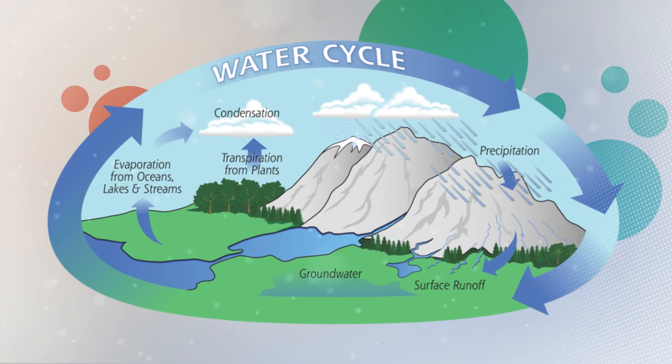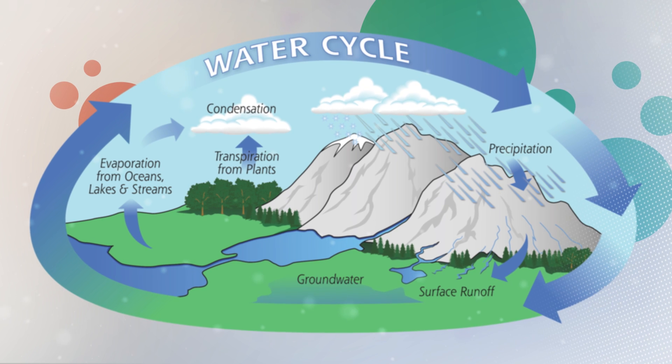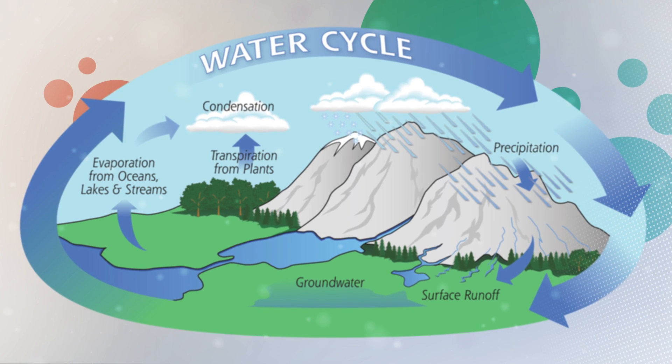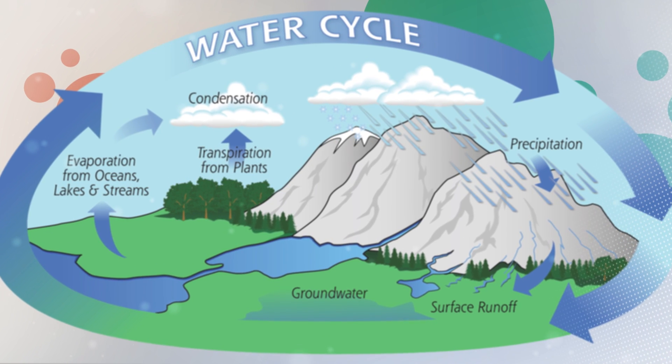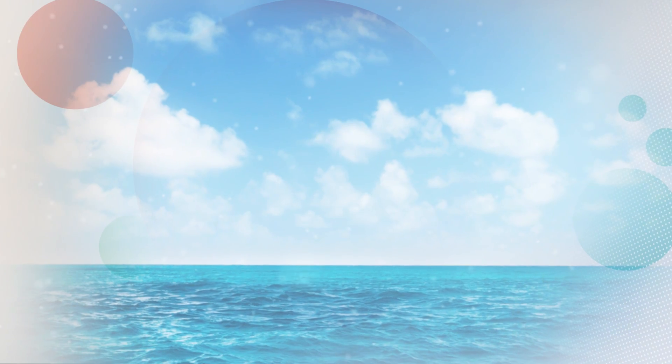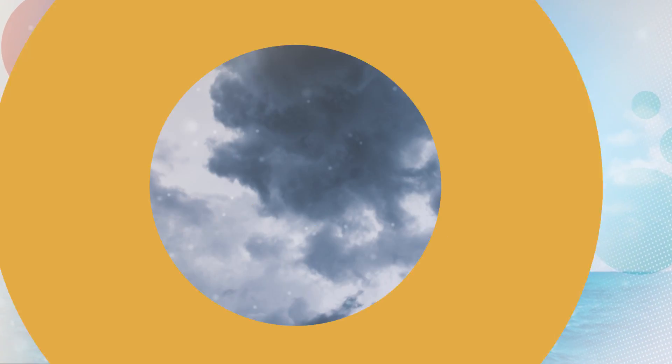Most of us are familiar with the global water cycle as rain falls, infiltrates the soil or runs off into rivers, or evaporates from lakes and oceans to form clouds. Much of the water cycle is easy to see and feel, but we are less familiar with the global carbon cycle as we sometimes only see its impacts.